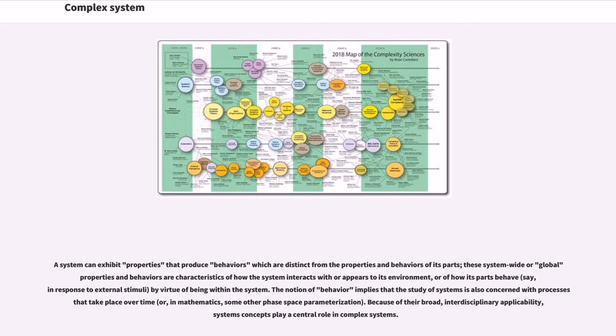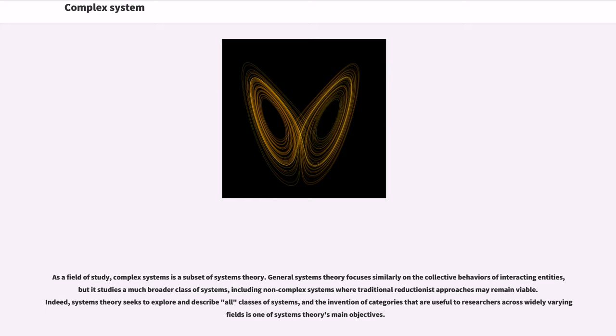Because of their broad, interdisciplinary applicability, systems concepts play a central role in complex systems. As a field of study, complex systems is a subset of systems theory. General systems theory focuses similarly on the collective behaviors of interacting entities, but it studies a much broader class of systems, including non-complex systems where traditional reductionist approaches may remain viable. Indeed, systems theory seeks to explore and describe all classes of systems, and the invention of categories that are useful to researchers across widely varying fields is one of systems theory's main objectives.